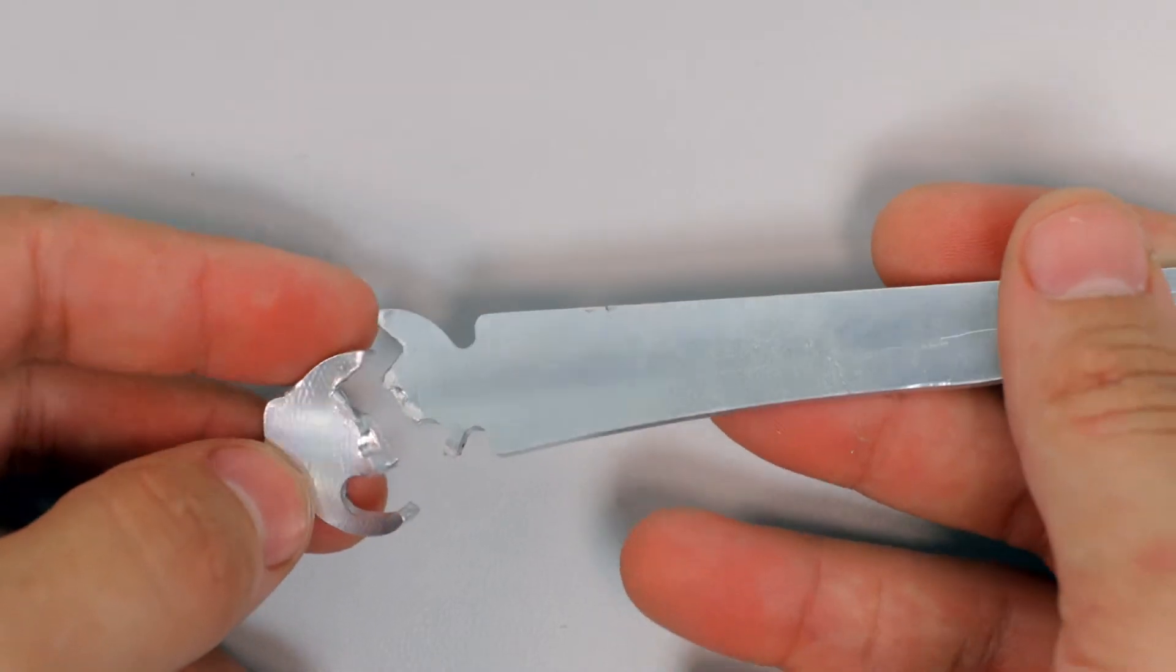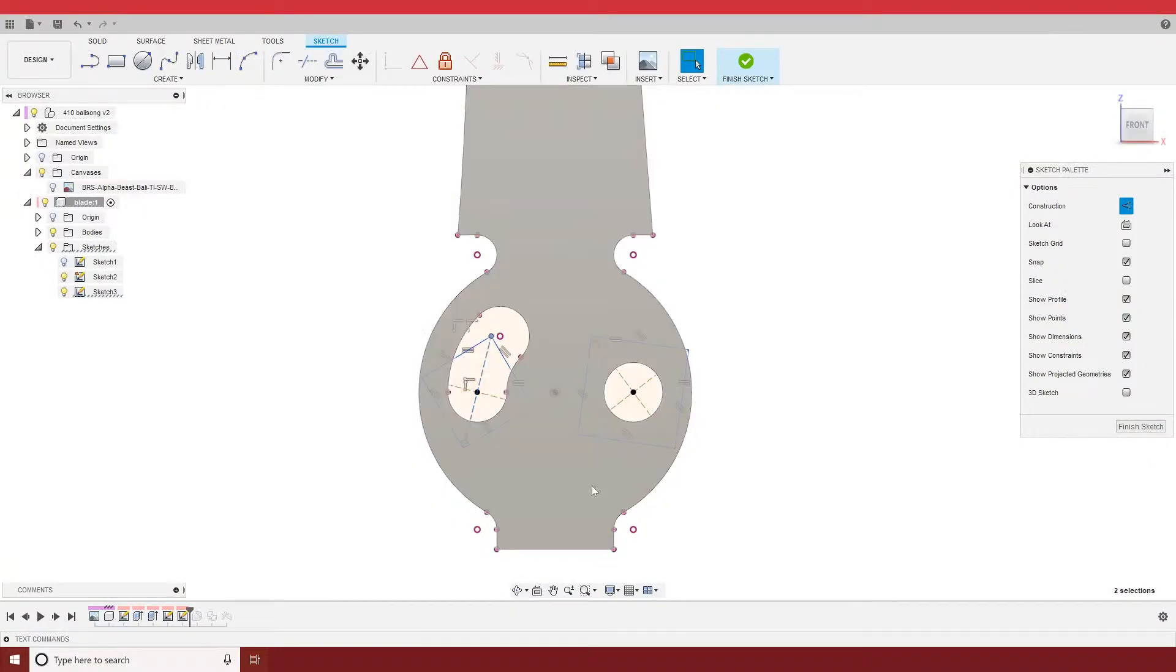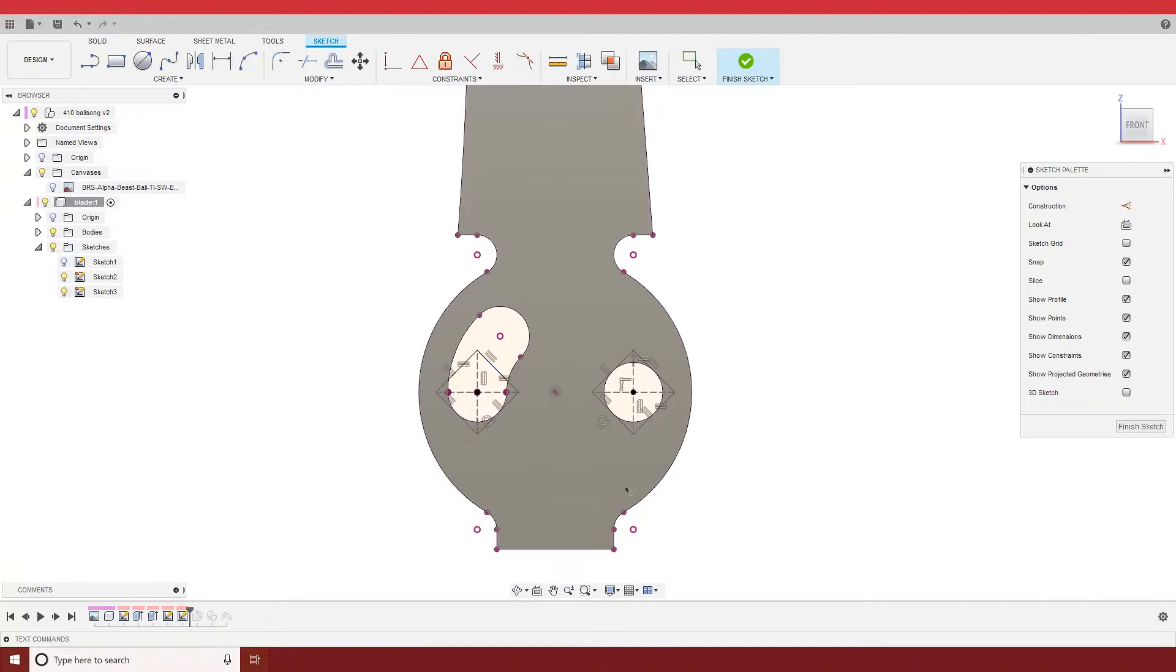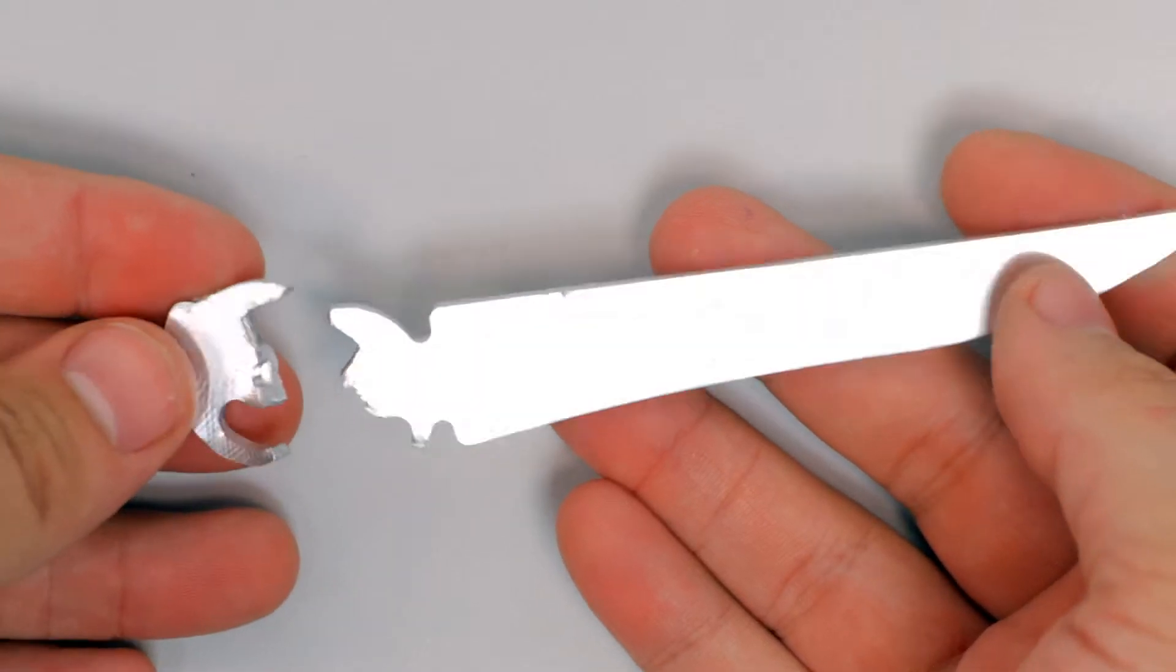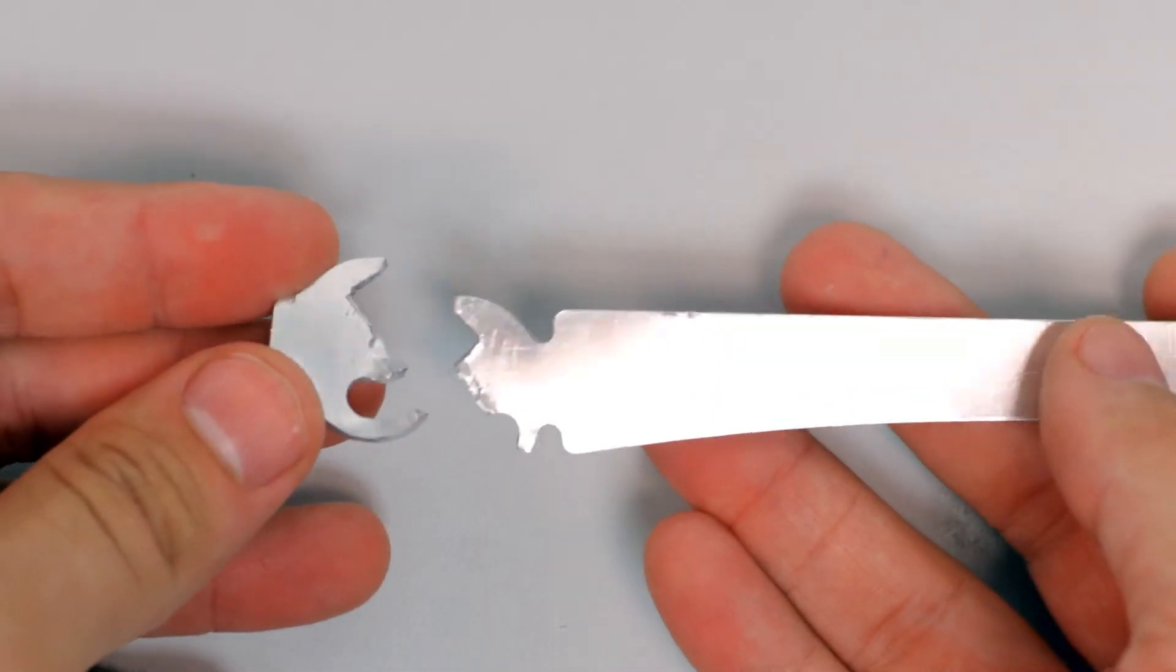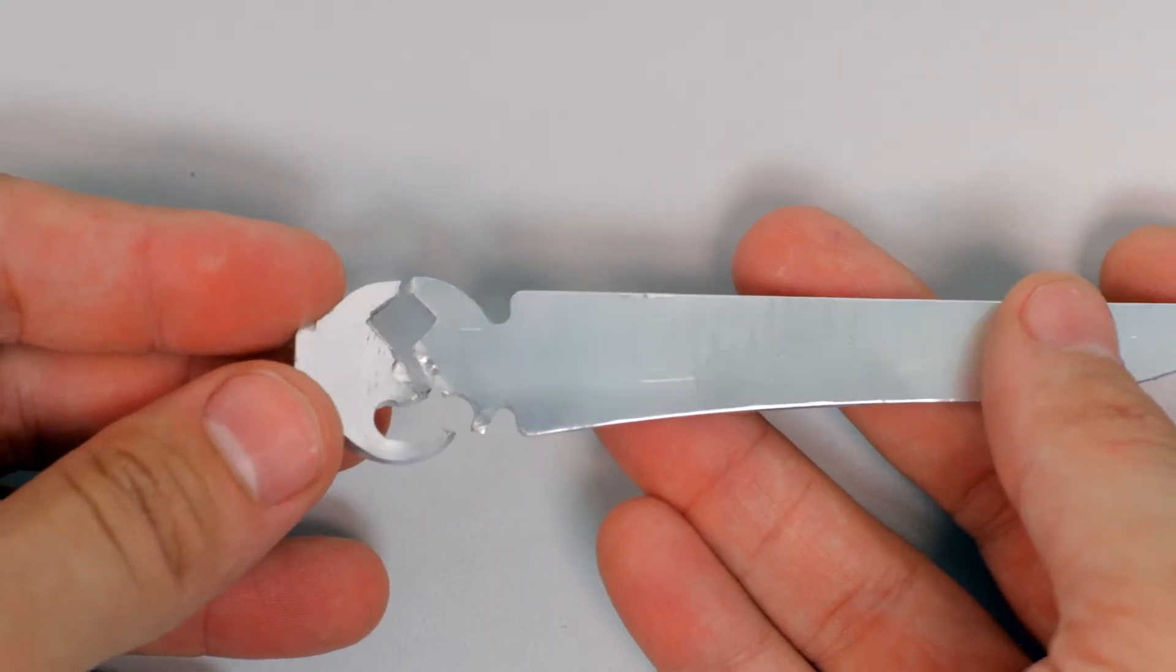Another problem with broaching is how do you make sure the broach is clocked to the correct angle? A lot of applications the broach can be at any angle you want, but for me I need the diamonds to point straight up, so I would have to make some kind of jig to hold the broach exactly at the right angle.